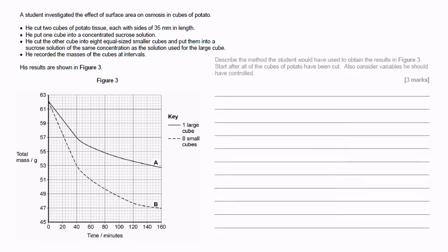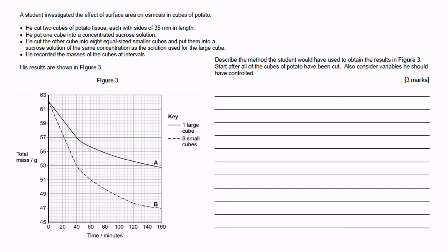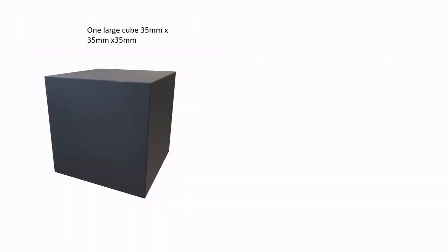We've got to describe the method. We've got to start from when the potato cubes have been cut and we've got to consider all of the controlled variables. Let's see if we can visualize what's happening here.